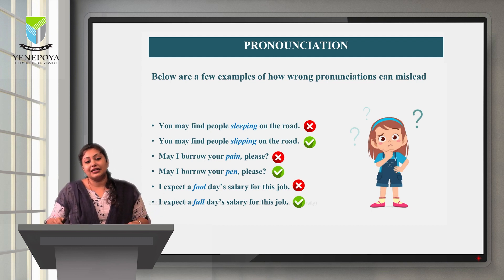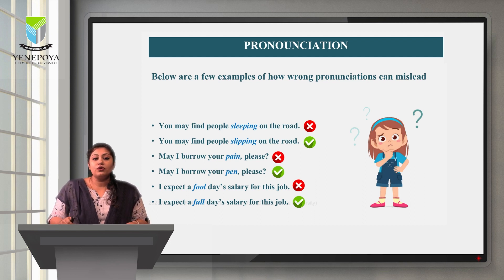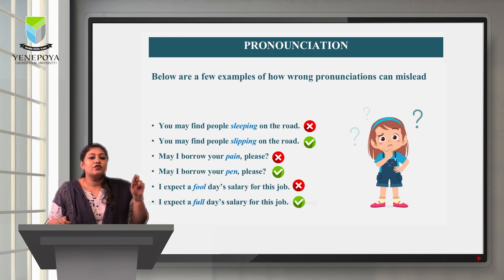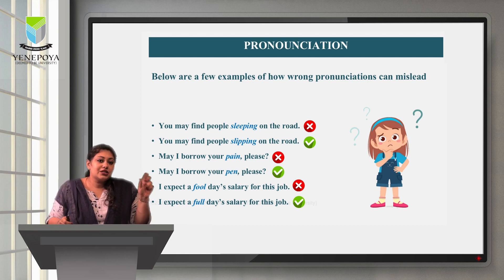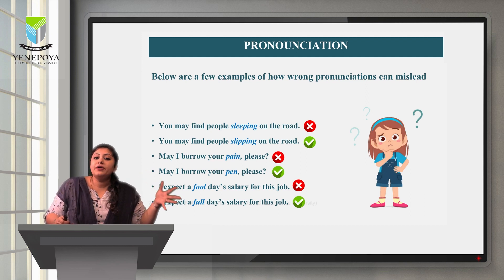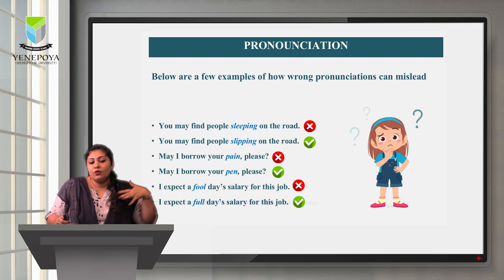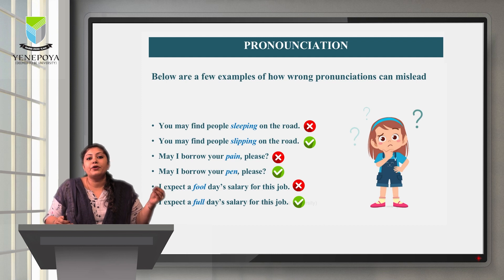Here is the first example. You may find people sleeping on the road — the incorrect version — versus the correct one: you may find people slipping on the road. You can see the minute change in pronunciation between 'sleeping' and 'slipping.' Saying 'sleeping' is entirely different from 'slipping,' which is what was intended.